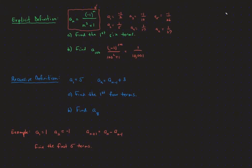A recursive definition, in contrast to an explicit definition, gives us the first term in the sequence and then how to get the next term from the previous term. This can be written as a sub n equals something involving a sub n minus 1. Alternatively, it could be written as a sub n plus 1 equals a sub n plus 3. Those two forms are equivalent — both tell us how to get the next term given the previous term.